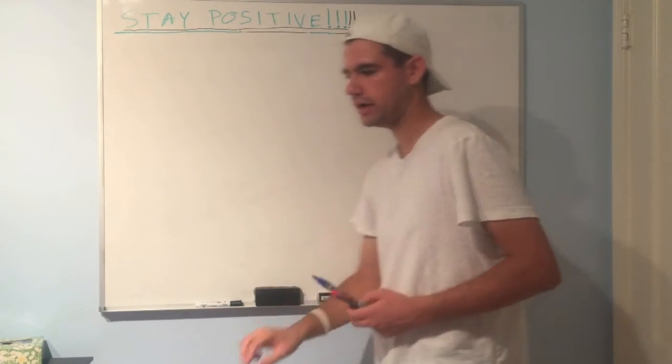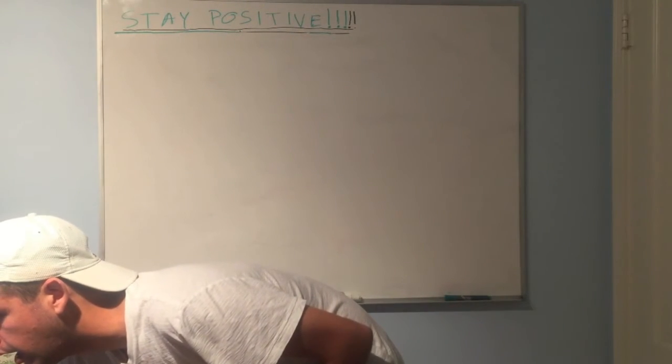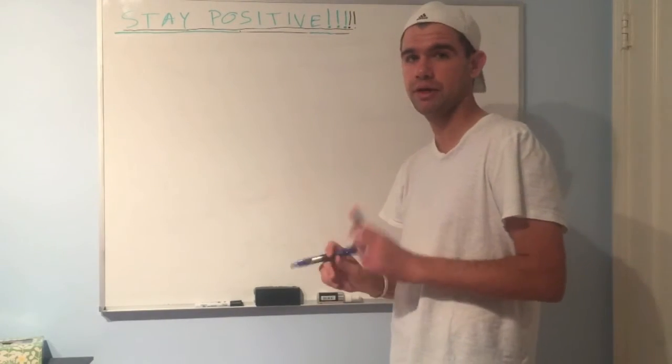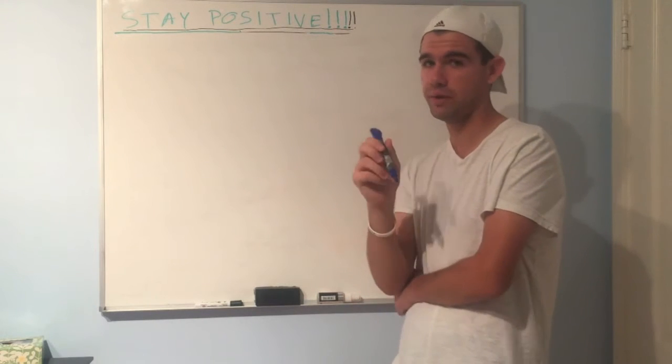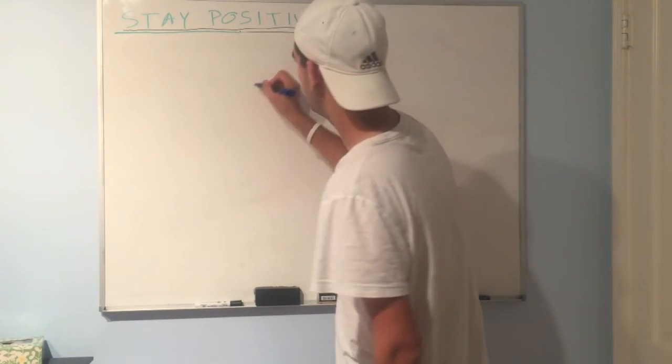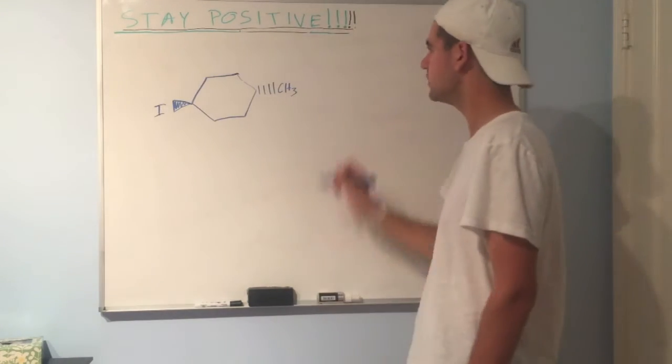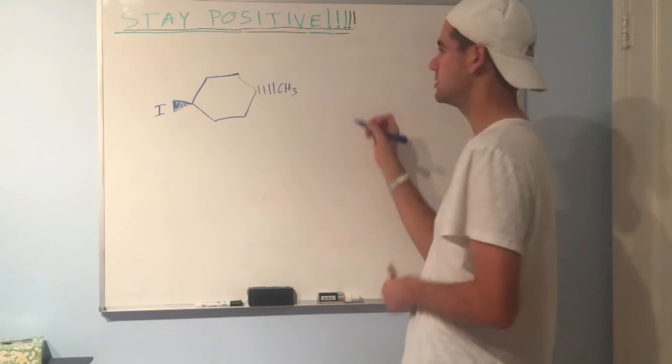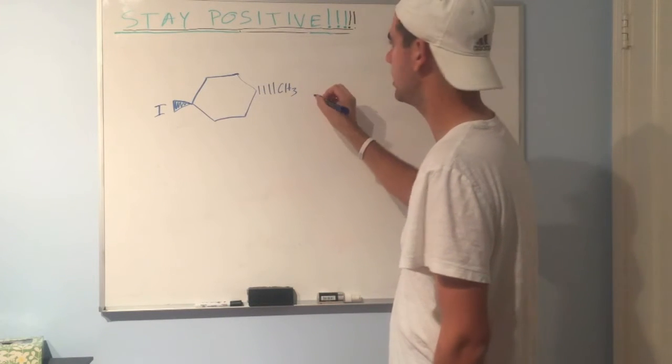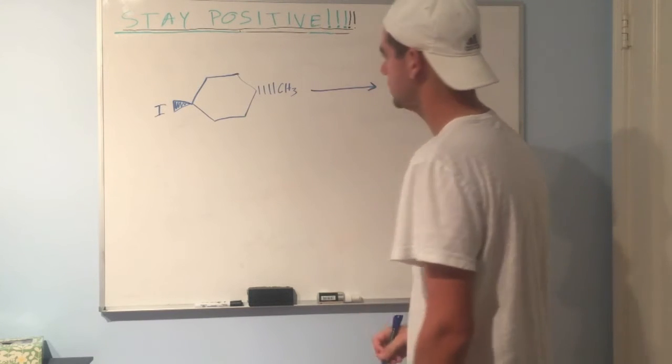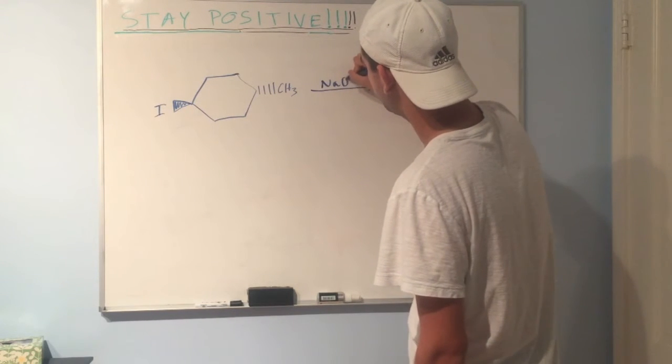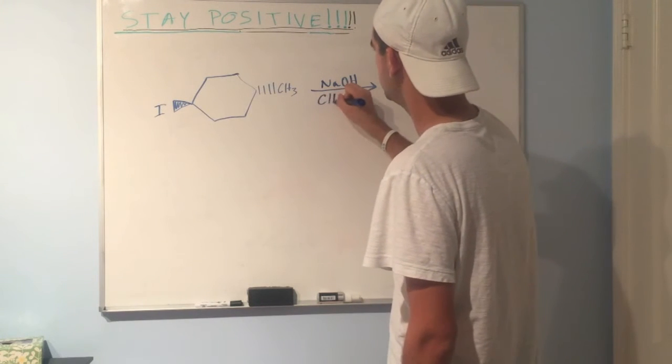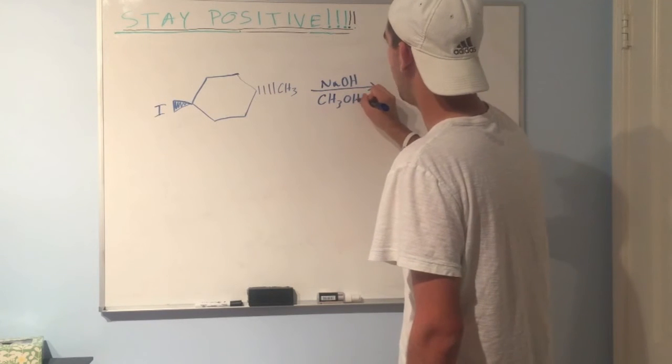Now here's a common trick that teachers will often put on exams. I want to do the same problem, but change it up a bit. And this is something that you should definitely be aware of going into a test. We're going to do the exact same problem. This time, I want to change one thing. I want to change the solvent. Remember last time we talked a lot about the solvent and how it affects nucleophilicity? If you haven't watched that video, I highly suggest it. Let's put it in NaOH, just like before, but the solvent, instead of being water, we're going to make it methanol. CH3OH. Now, how does this change things?